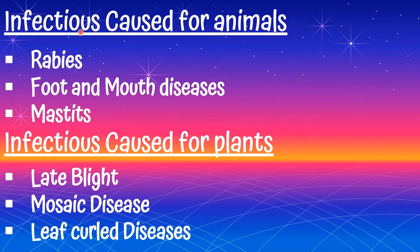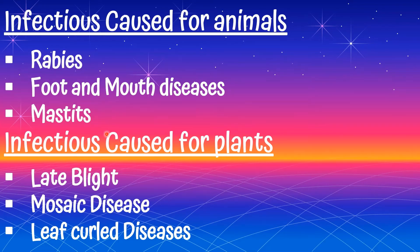Infectious diseases caused in animals include rabies, foot and mouth disease, and mastitis. Rabies is called Jala Beethi Kaav in the local language. Infectious diseases caused in plants include blade blight, mosaic disease, and leaf curl disease.